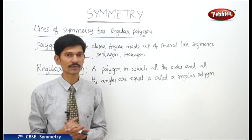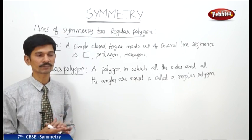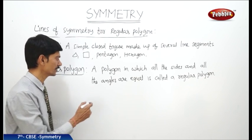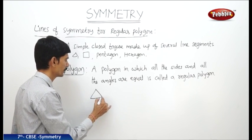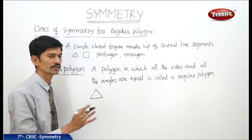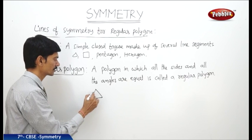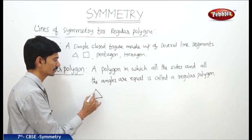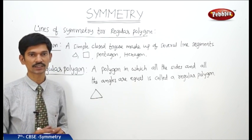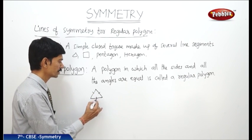How many line segments does a polygon need at minimum? We need at least three line segments to form a polygon, because with two line segments there is no polygon. If you take a polygon with three sides in which all the sides and all the angles are equal, that is an equilateral triangle — so an equilateral triangle is a regular polygon.